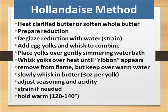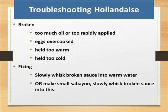Hold hollandaise warm at 120 to 140 degrees. It can be held warm for 2 hours, then discard for safety. Troubleshooting: broken hollandaise may result from too much oil or oil applied too rapidly, eggs overcooked, held too warm, or held too cold. To fix: slowly whisk the broken sauce into warm water, or make a small sabayon and slowly whisk the broken sauce into it.